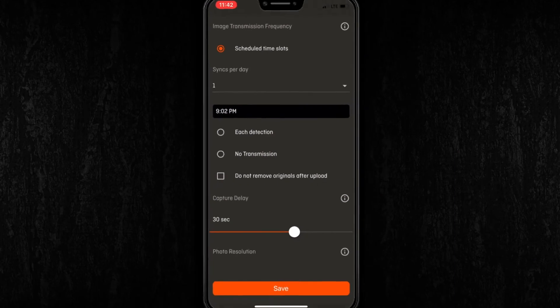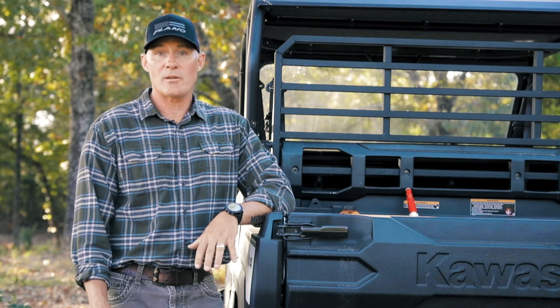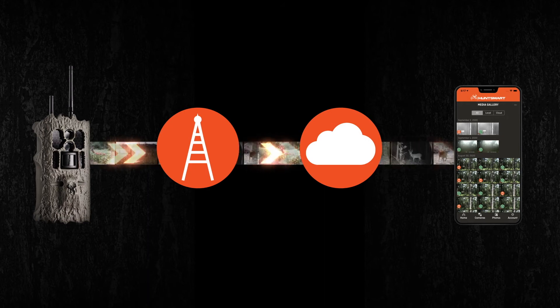You will also notice a checkbox to prevent removing originals after upload. If left unchecked, the camera will delete the pictures off the SD card once they've been uploaded to the cloud. This prevents your card from reaching its full capacity. Keep in mind, once the image is in the cloud, it can always be saved to your phone or desktop.